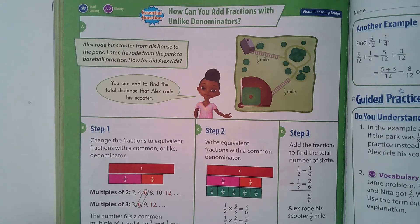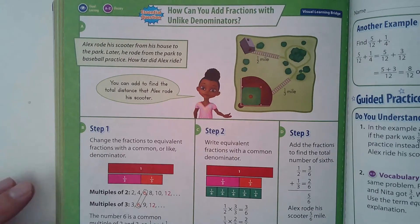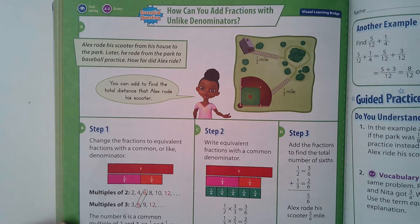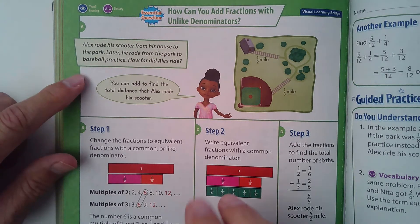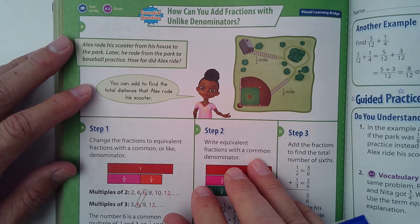Okay fifth graders, we are starting lesson 7-3 on page 278. We're dealing with adding fractions that have unlike denominators, and we've been working for the last few days on finding common denominators for fractions.